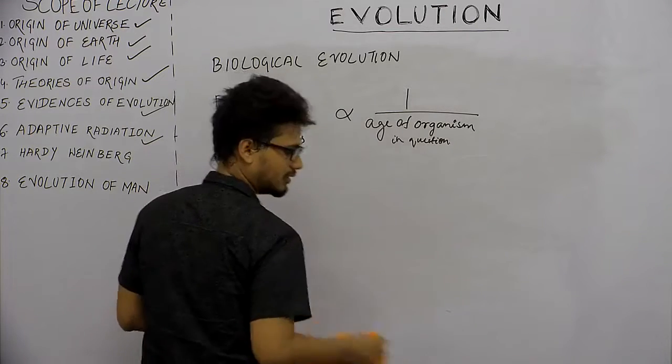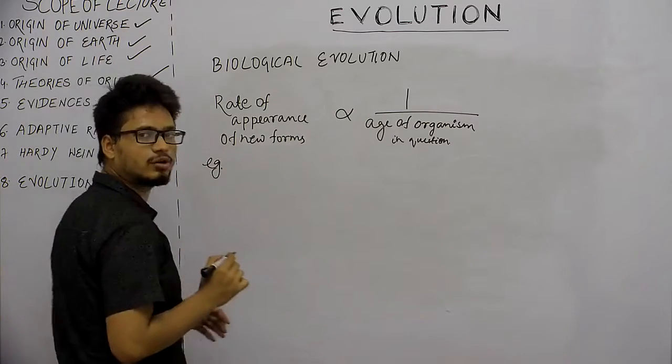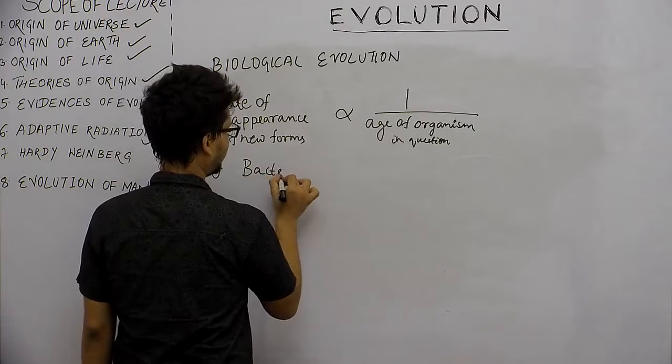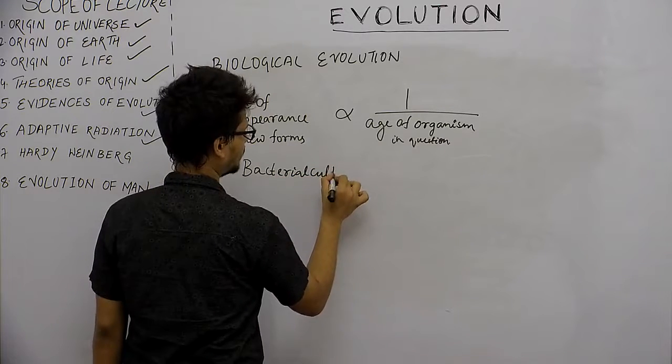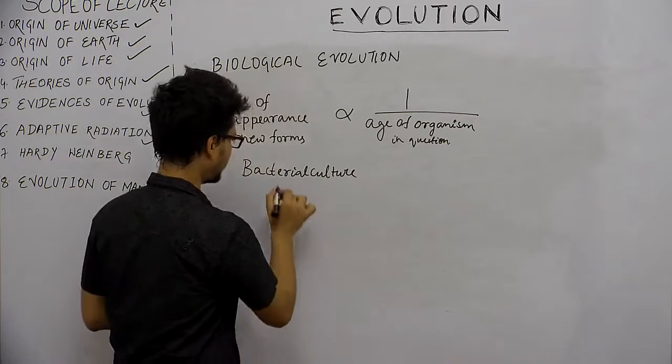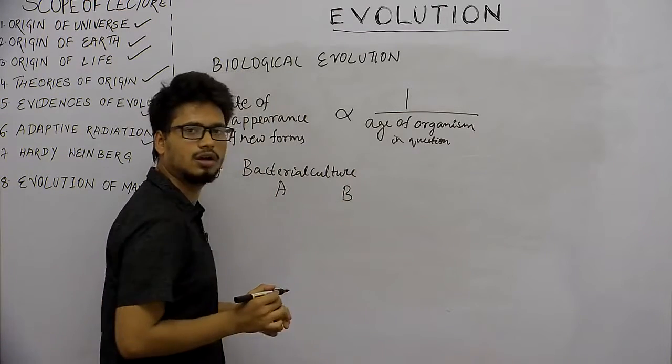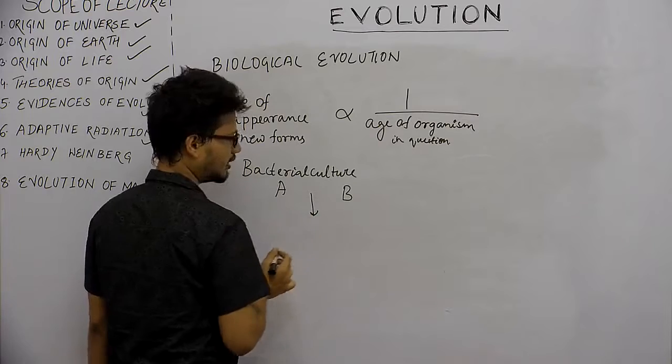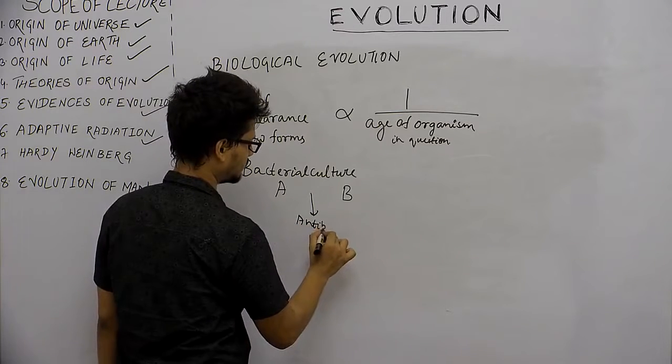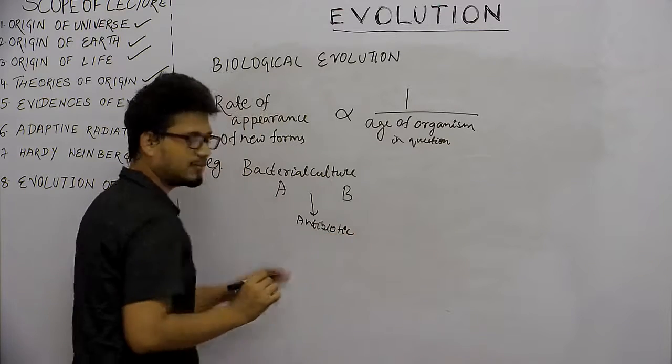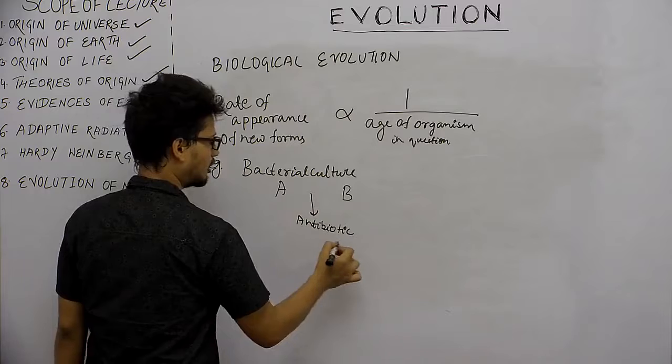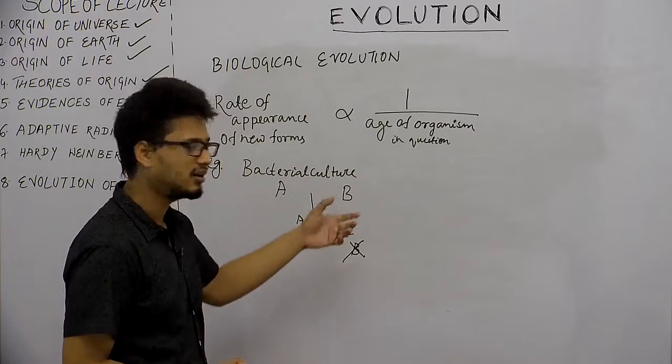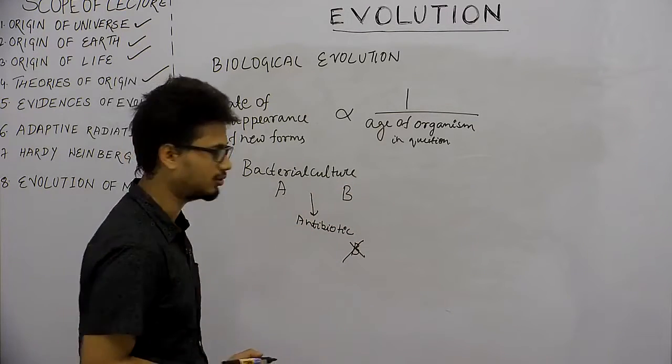Let's take an example. We are growing a bacterial culture with two types of bacteria A and B. We have treated both of them with antibiotics. B could not grow.